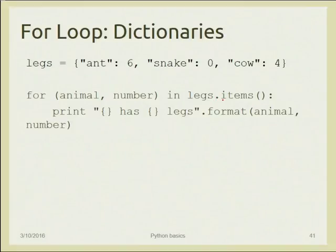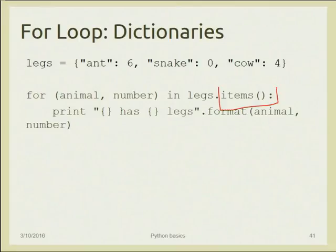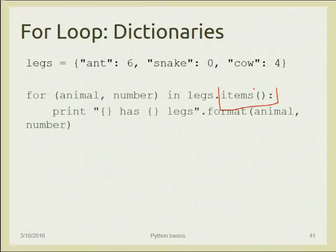Items is not a generic function like range — it is a specific method that belongs to the dictionary class. It returns two variables each iteration — the key and the value. There are also 'keys()' and 'values()' methods: 'keys()' returns all keys with no values, and 'values()' returns only the values with no keys.